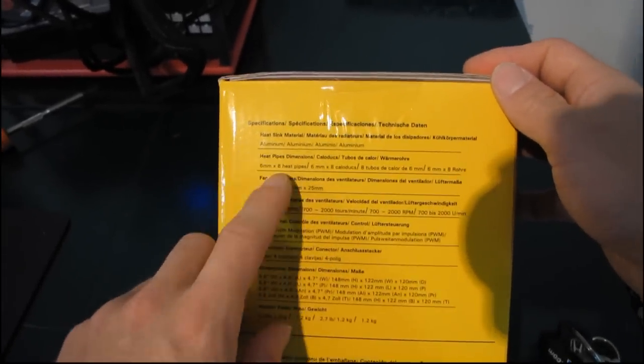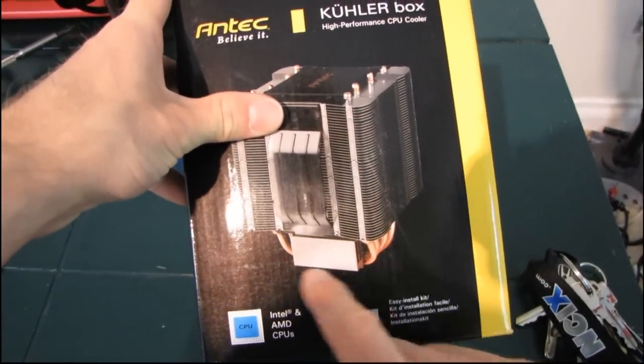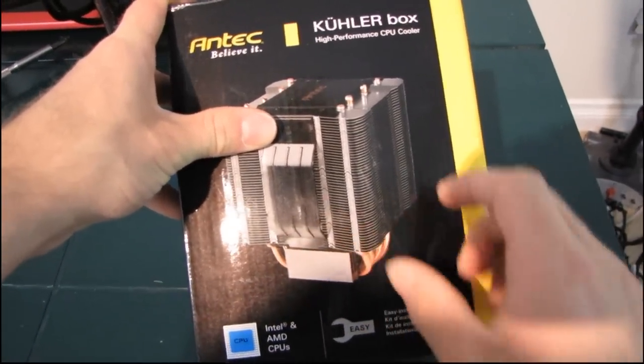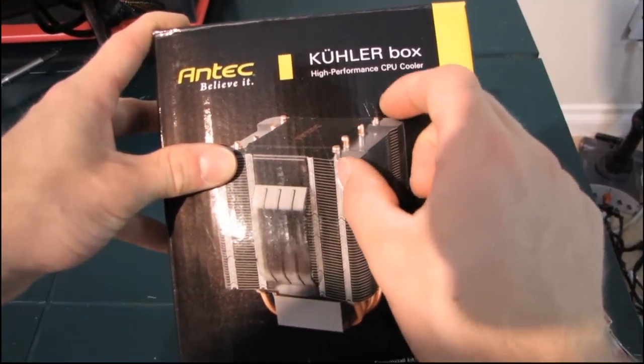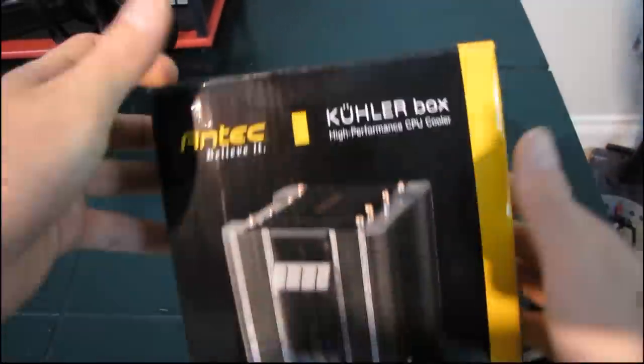The heatsink material is aluminum. It has eight six millimeter heat pipes, and I think they're describing the way that it has four heat pipes going through the base, and then each side goes up four times. So it's a total of eight effective heat pipes by using this dual tower design.